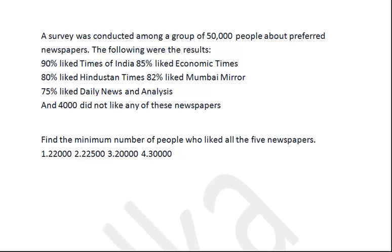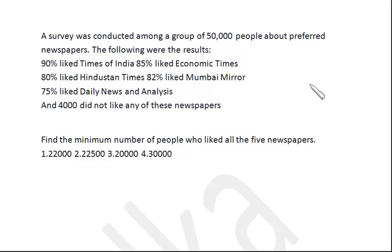The problem is very simple — just understand the logic behind it. How many people are liking at least one newspaper? It is mentioned that 4,000 did not like any newspaper. 4,000 from 50,000 means 8% of the people are not liking anything. So the calculation for the 5 newspapers involves just 92% of the people. There is a restriction: the percentage should not exceed 92%, because 92% of the people are liking at least one or more newspapers.